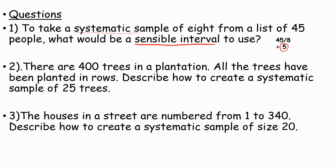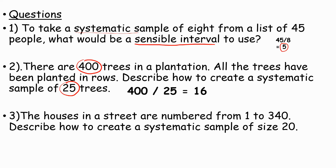There are 400 trees in the plantation and all the trees have been planted in rows. Describe how to make a systematic sample of 25 trees. We could firstly work out the interval: 400 divided by 25 equals 16. Then you could choose every 16th tree — choose the first tree and then from there, every 16th tree. That would be a systematic sample of 25 trees.